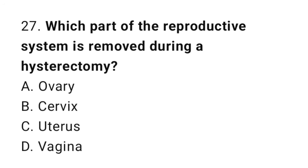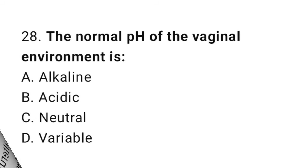Question number 27: Which part of the reproductive system is removed during a hysterectomy? The correct answer is C, uterus. Question number 28: The normal pH of the vaginal environment is? The correct answer is B, acidic.